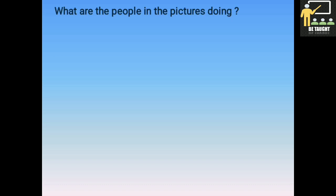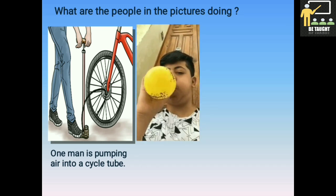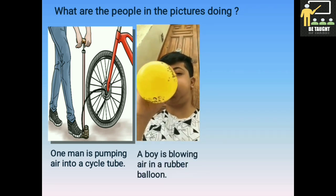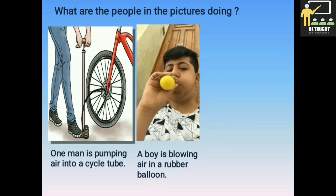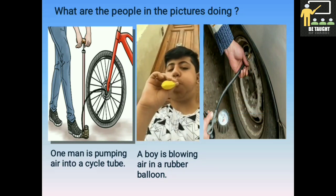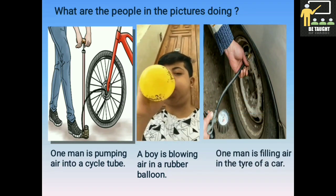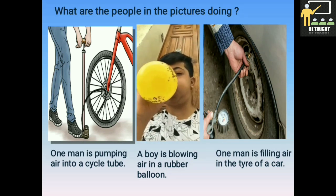What are the people in the pictures doing? In the first picture we can see one man is pumping air into a cycle tube. In the second picture we can see that a boy is blowing air in a rubber balloon. And in the third picture we can see one man is filling air in the tire of a car.